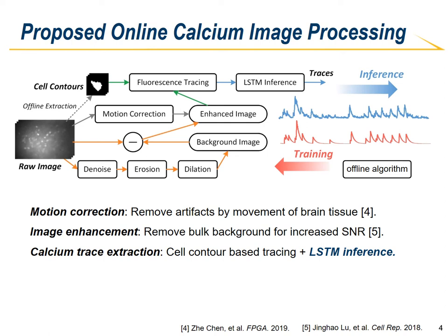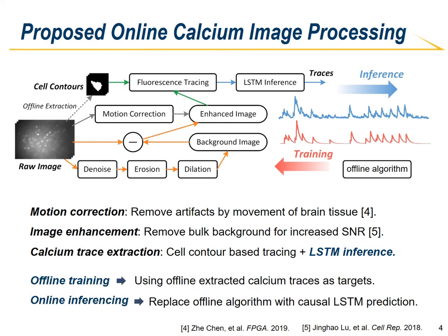During offline training, we use the cell centroid-based traces as input and the offline extracted traces as the training target. After training is done, we use the well-trained LSTM networks to replace the offline method to perform causal prediction.